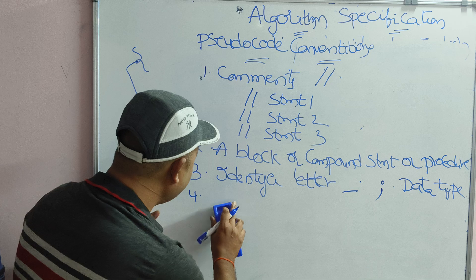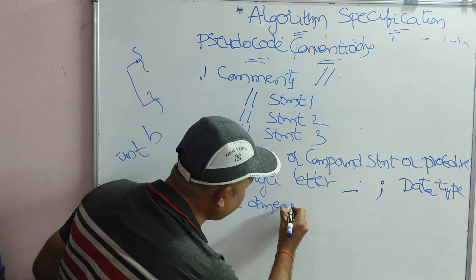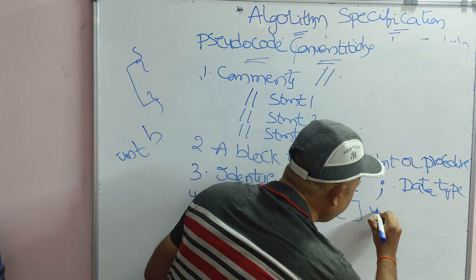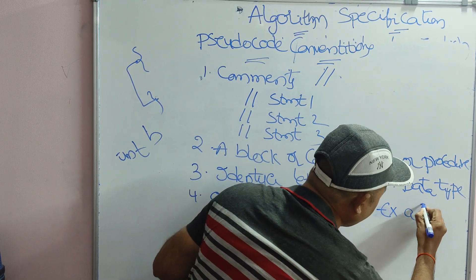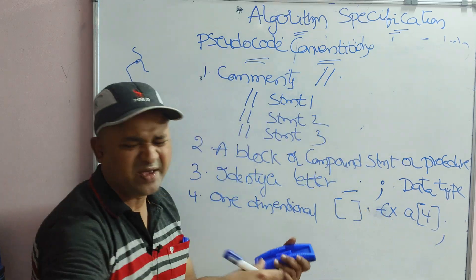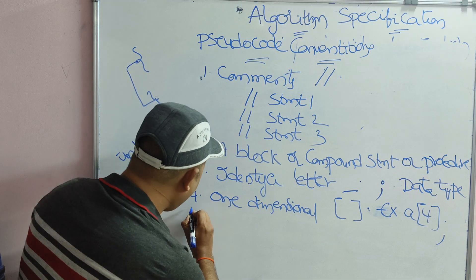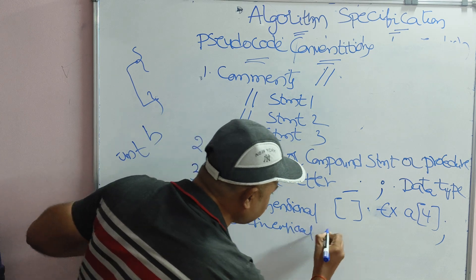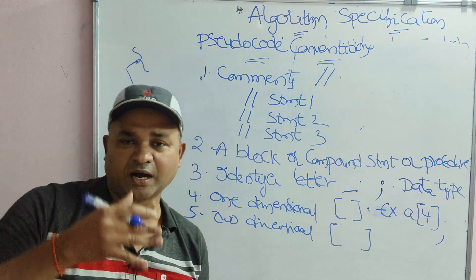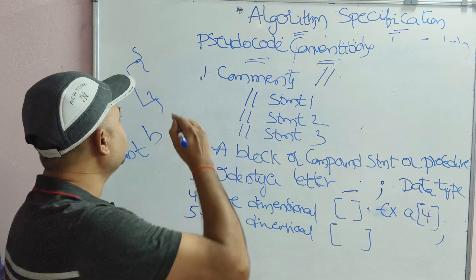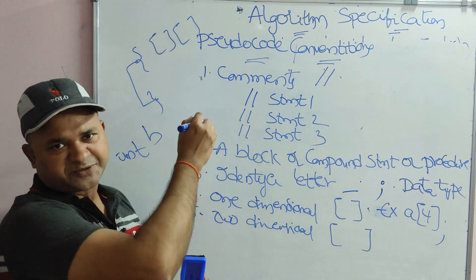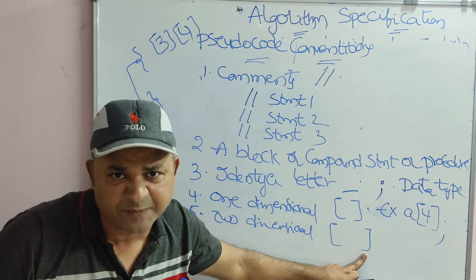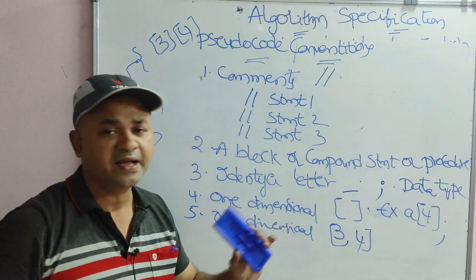For arrays: one-dimensional array elements are accessed with a subscript, just like in C. For example, to access the fifth element we use a[4], since index starts from zero. For two-dimensional arrays, elements are accessed by a single subscript, but the row and column are separated by a comma — unlike C, which uses two separate subscripts.